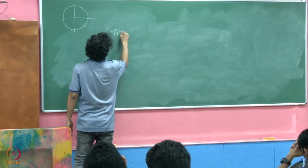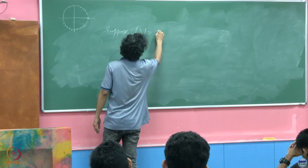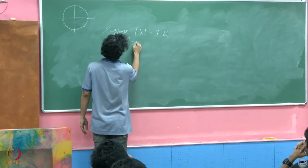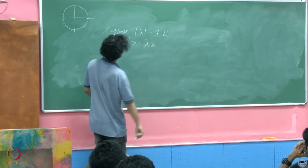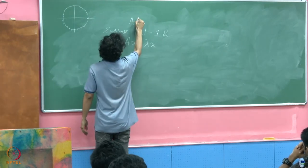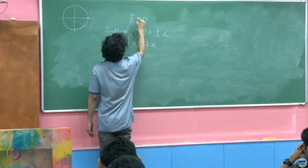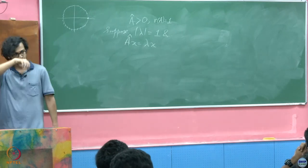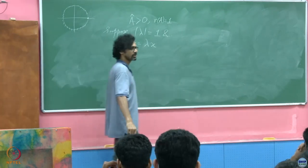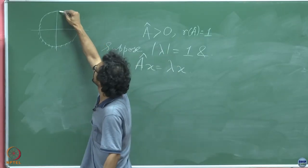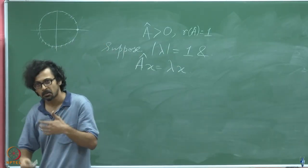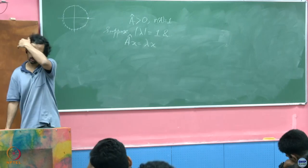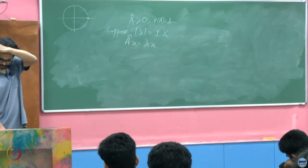We are trying to argue the contrary — that on the spectral radius circle you can potentially have other points corresponding to the maximum magnitude eigenvalue. We need to rule out why this cannot be the case. Suppose we take the moduli entry-wise — this is a vector. Then |λ| times |x| equals |Â x|, and since |λ| = 1, this just becomes |Â x| = |x|.